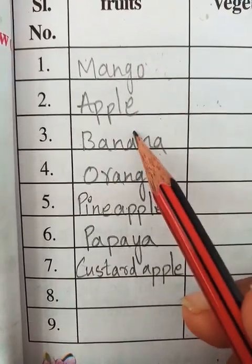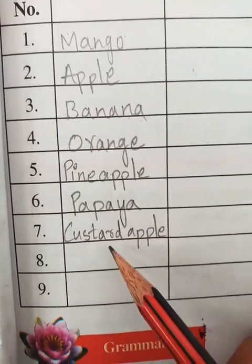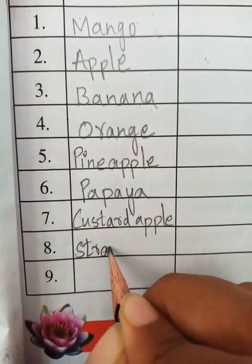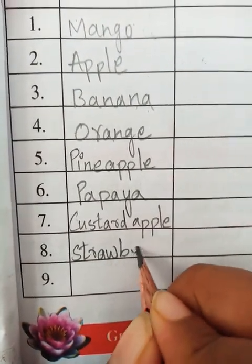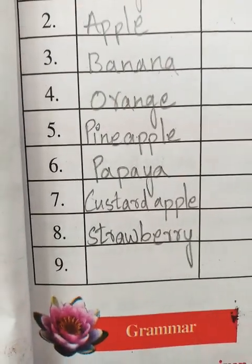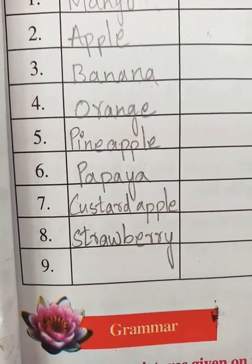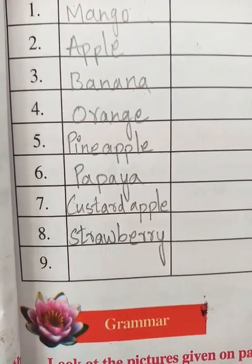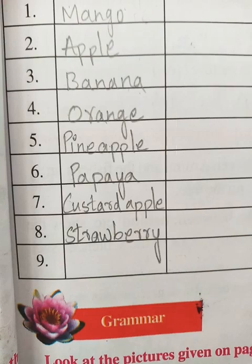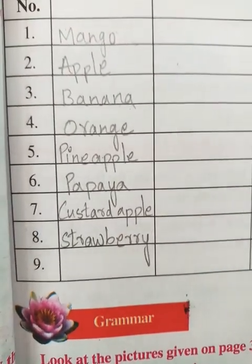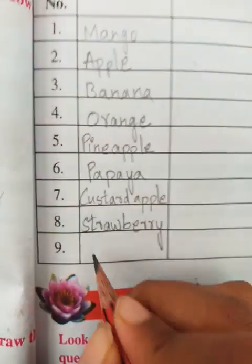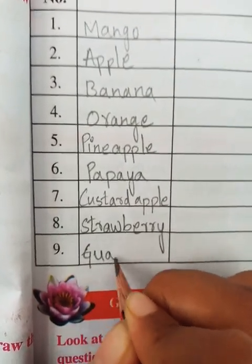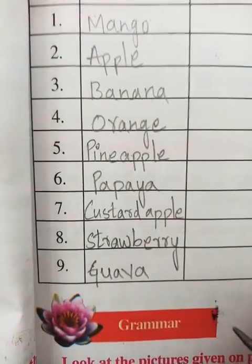So we have: mango, apple, banana, orange, pineapple, papaya, custard apple. Also strawberry (S-T-R-A-W-B-E-R-R-Y). Then we have guava - it is not 'Goa', children, it is guava. That finishes our fruits. Now let's move to vegetables.